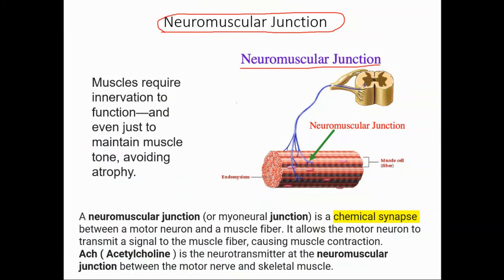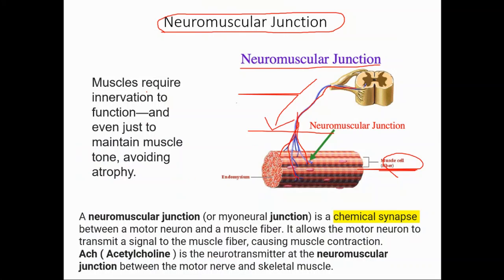The neuromuscular junction is a junction between a nerve cell and a muscle fiber. An axon branches out and takes contact with a muscle fiber — that's the neuromuscular junction. For skeletal muscles, this innervation is required. If you cut off this innervation, a muscle fiber is not able to contract anymore. The signal for contraction comes from that nerve cell.